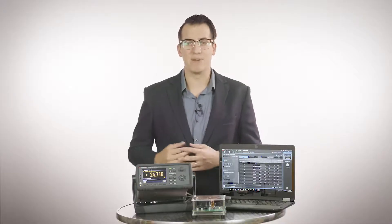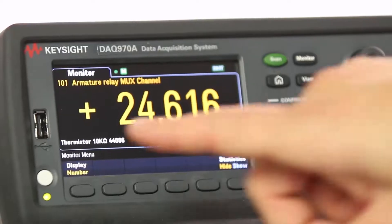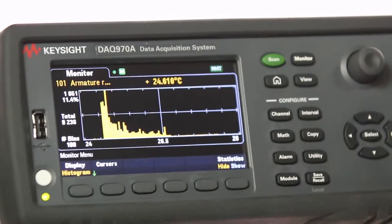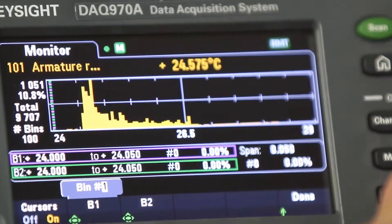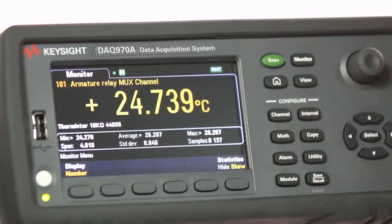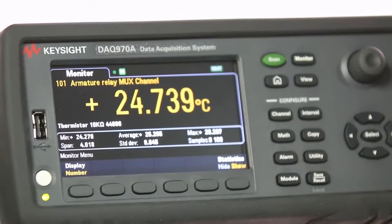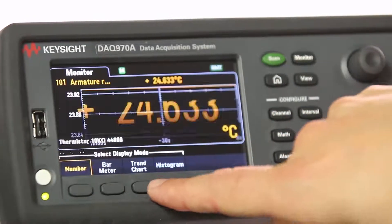The DAQ 970A has a built-in visualization toolset that provides more than just a single digital line readout. This toolset allows you to analyze data on a real-time basis. It can provide statistical data during measurements and you can view sample data results in numbers, trend charts, bar charts, histograms, and more.